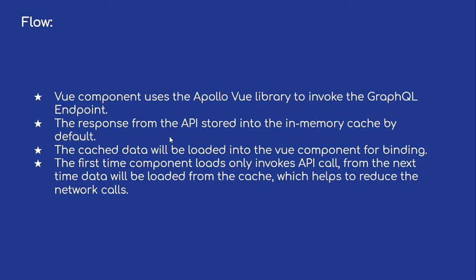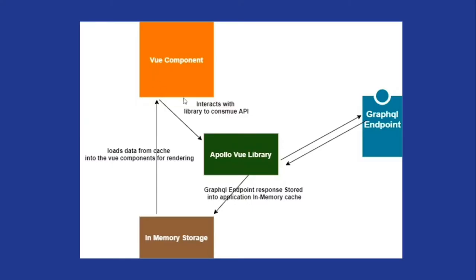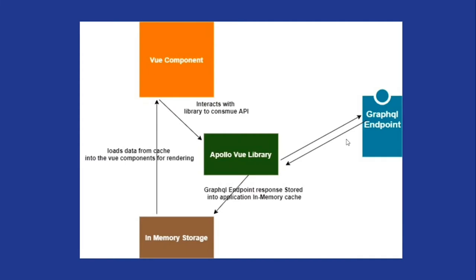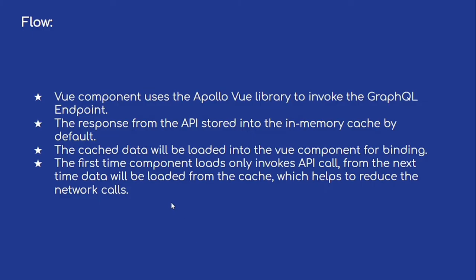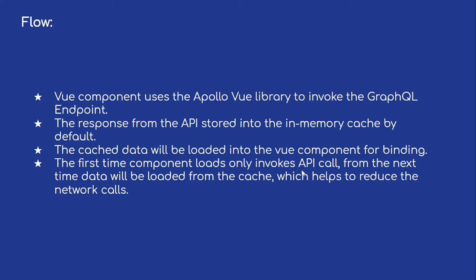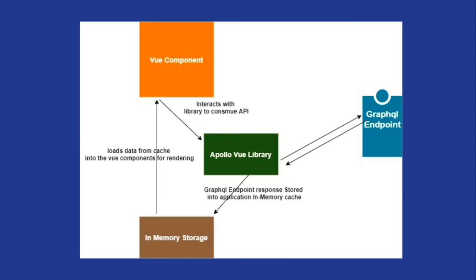The benefit of storing in in-memory is to reduce the number of network calls. The Vue component interacts with the library to consume the API, the library invokes the GraphQL endpoint, and the endpoint returns the response. The Apollo Vue library stores the GraphQL endpoint response into the in-memory query cache. This cached data will be loaded into the Vue components with respect to their bound properties. The first time a component loads it invokes the API call; from the next time, data is loaded from the cache.